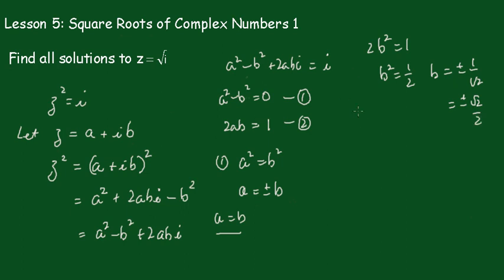But a equals b, so when b equals root 2 on 2, a will also equal root 2 on 2. And when b equals minus root 2 on 2. Therefore, z will equal root 2 on 2 plus i root 2 on 2.